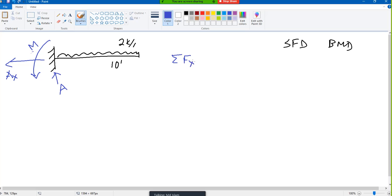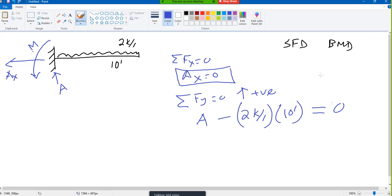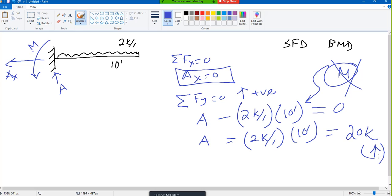First apply summation of force along x direction equals 0. No other force along x direction, so Ax is 0. Then take summation of Fy equals 0. This time we can apply summation of Fy now, right? No other force, no other unknown in y direction, only one. So, A is upward minus 2 kip per foot times 10 feet equals 0. What is my A? A is 2 kip per foot times 10, which is 20, and we got a positive number. That means whatever direction I assumed is right.